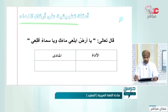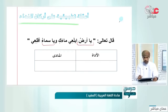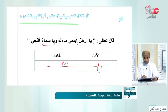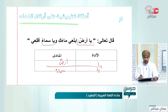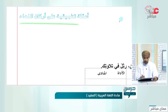قال تعالى: يا أرض ابلعي ماءك ويا سماء أقلعي. الأداتان في الأسلوبين هي 'يا'. المنادى في الأسلوب الأول 'أرض' وفي الأسلوب الثاني 'سماء'. إذن هذا هو تحديد الأسلوب وتحديد الأداة وتحديد المنادى.